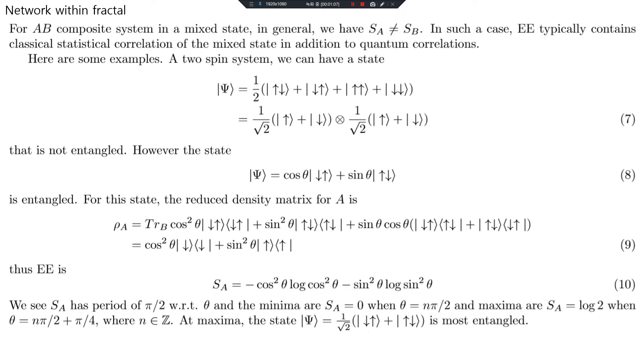For a two-spin system, we can have a state that is not entangled. However, the state |ψ⟩ = cos(θ)|↑↑⟩ + sin(θ)|↓↓⟩ is entangled. For this state, the reduced density matrix for A gives entanglement entropy with period π/2. The minima of S_A is 0 when θ is nπ/2, and maxima when θ is nπ/2 + π/4. The maximum state is most entangled.